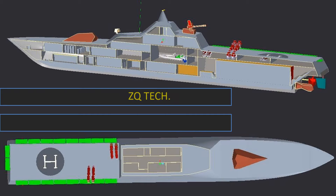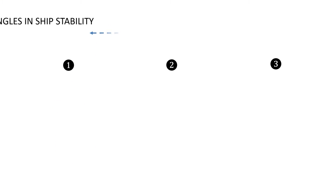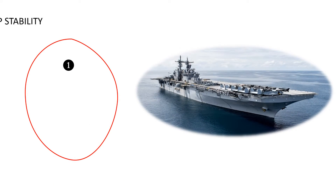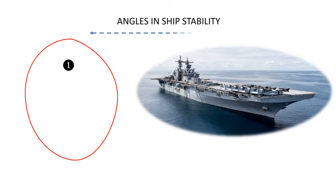Hello friends, you are watching the channel CQTech. This channel is about Neville Arc Lectures Forum, and in this video we are going to discuss an important angle in ship stability. Let's get started. There are three most important angles you must know: the angle of list, the angle of heel, and the angle of loll. For the present field of study, we will discuss only the angle of list.